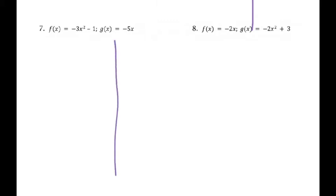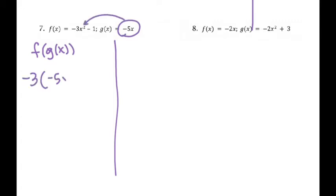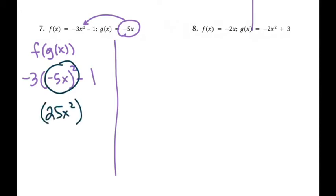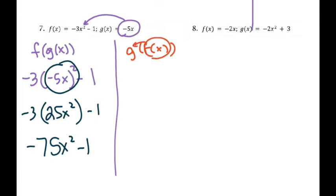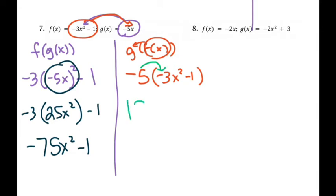Go ahead and try numbers seven and eight, then come back. For number seven, to do f of g of x you take g and put it into f: negative 3 times negative 5x squared minus 1. First you do negative 5x times negative 5x, then multiply by negative 3 and subtract 1, giving negative 75x squared minus 1. On the other side, for g of f of x you take f of x and put it into g: negative 5 times f of x, with distributing to get your g of f of x.